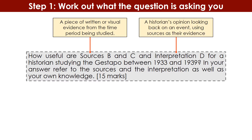You also have something called an interpretation to analyse. An interpretation is different from a source because it is a historian's opinion looking back on an event, using sources as evidence for their specific opinion. The key difference is that an interpretation is after the time period — it looks back retrospectively. Without realising it, many of you will have already made interpretations in your history lessons, because when a teacher asks what you think about a specific event or source, you are making an interpretation. So you'll have two sources from the time and one historian's opinion.